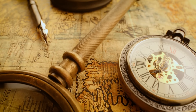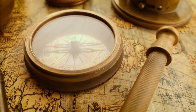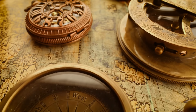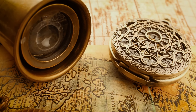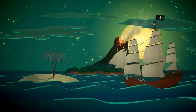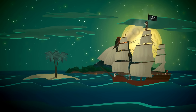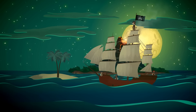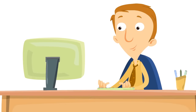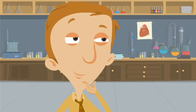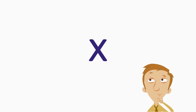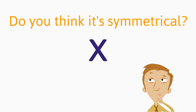This is just a regular map that looks really old. The letter X is the last letter we're going to look at. You are quickly becoming a symmetry expert! Let's look at the letter X together. Just by looking at it, do you think it's symmetrical?